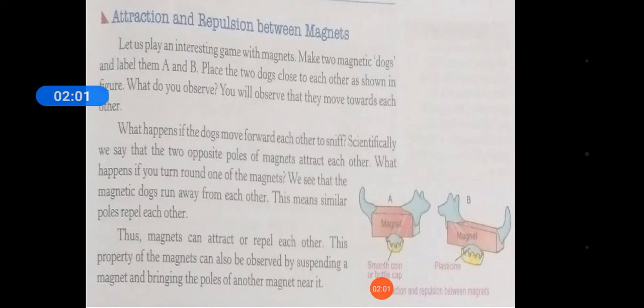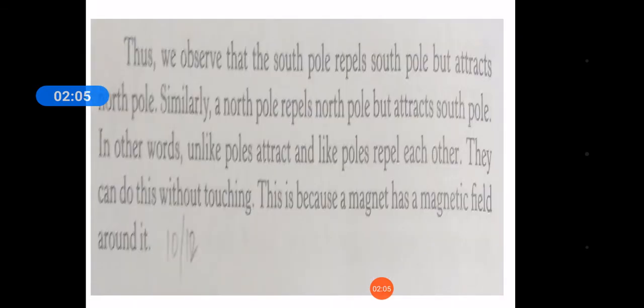Just as I have told you clearly, we observe that the south pole repels south pole but attracts north pole. Similarly, a north pole repels north pole but attracts south pole. In other words, unlike poles attract and like poles repel each other.